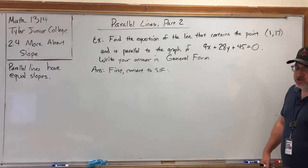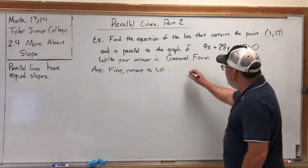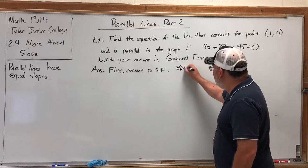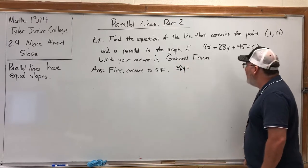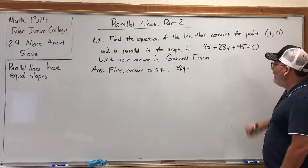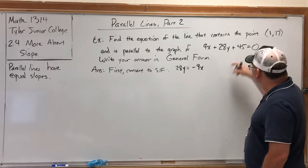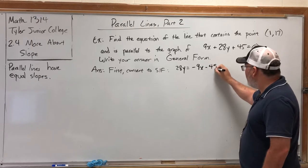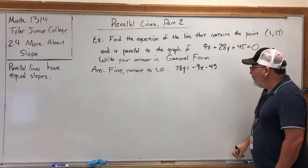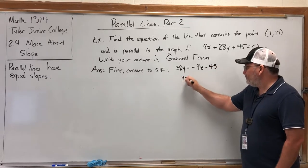So we'll leave the Y on the left, so it stays 28Y. We'll move the other two terms to the right, so they'll both change signs. The 9X will become negative 9X, and the plus 45 will become minus 45. Then we'll divide everything by 28.